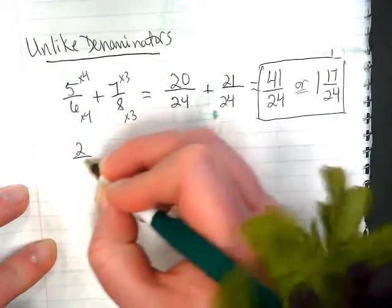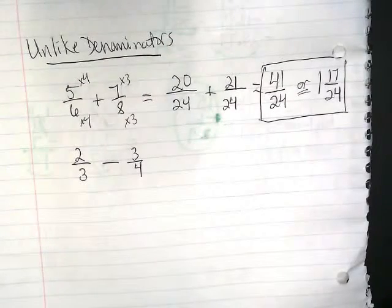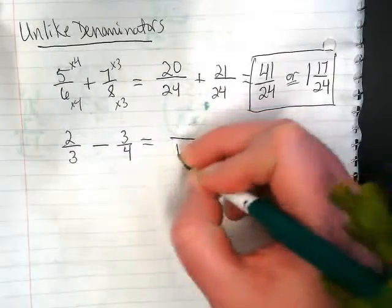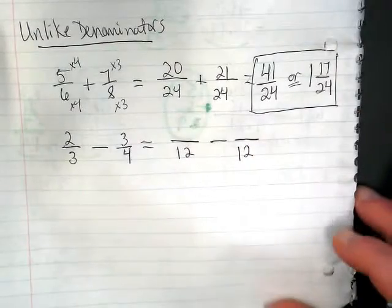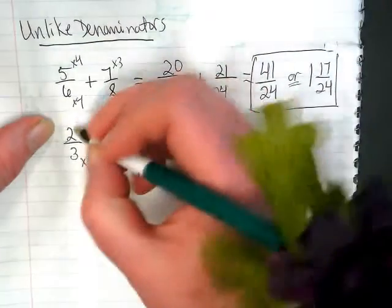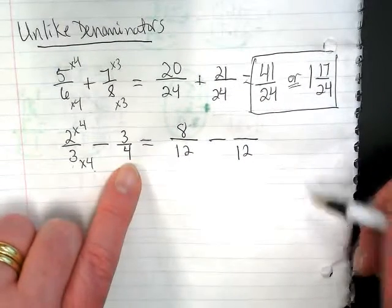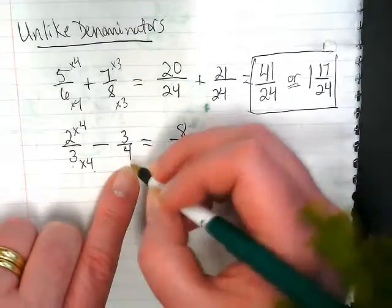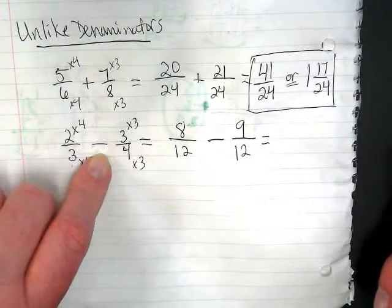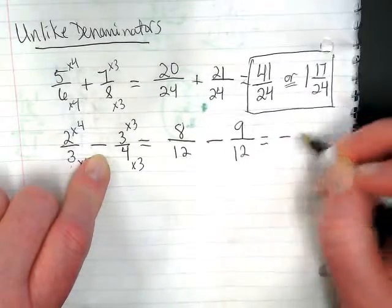What if I have 2 thirds minus 3 fourths? We need to think of a common denominator. And the lowest common denominator of 3 and 4 is 12. So we're going to reset this up as 2 fractions over 12. We want to think about 3 times 4 gets us this 12, so the numerator has to also be multiplied by 4. 3 times 4 is 12, 2 times 4 is 8. This fraction, we're going from a denominator of 4 to 12, so we multiply this by 3. That means the numerator also has to be multiplied by 3, giving us 9. Now here's where this gets a little bit different from when you guys have done these in the past. If I have 8 twelfths minus 9 twelfths, I'm going to end up with a negative 1 over 12.